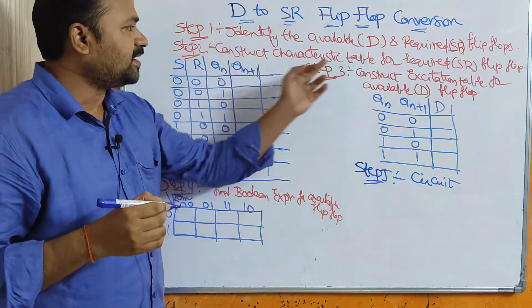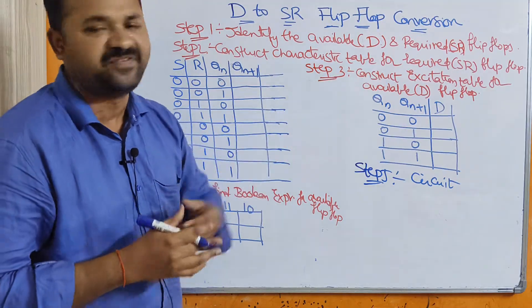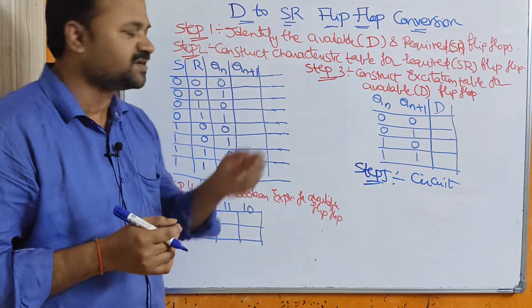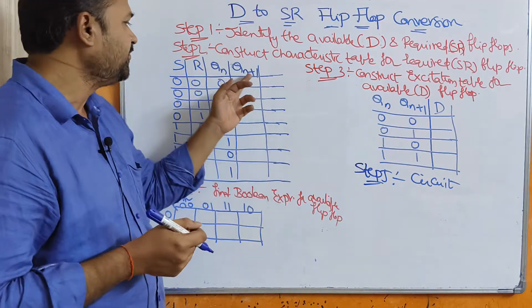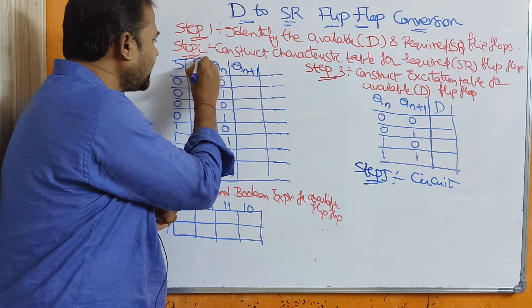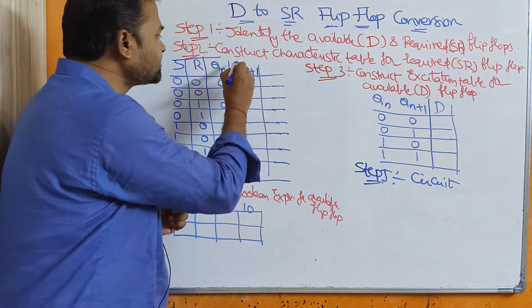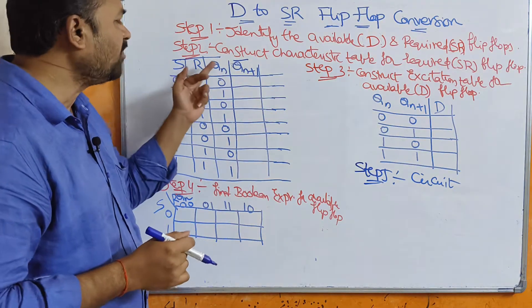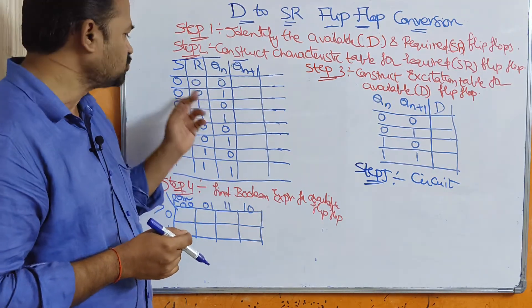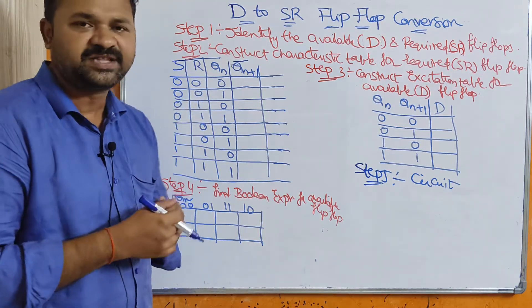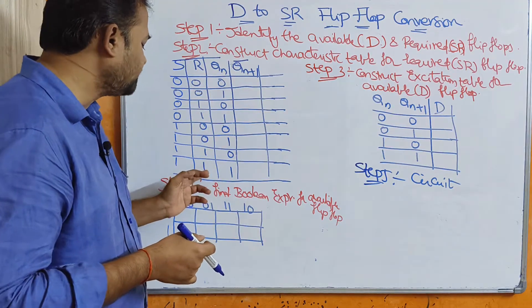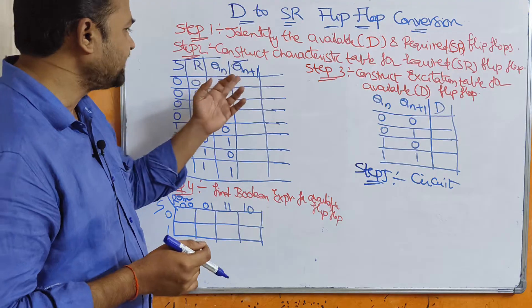First let us see the characteristic table for the required flip-flop. Here S and R are the inputs, and we have Qn and Qn+1. Qn means current state output, whereas Qn+1 means next state output. S, R, and Qn are the inputs, whereas Qn+1 is the output. We have three inputs, so totally we will have 2³ = 8 combinations, from 0 to 7, in binary notation from 000 to 111.